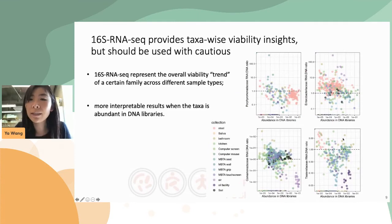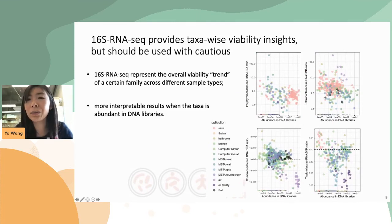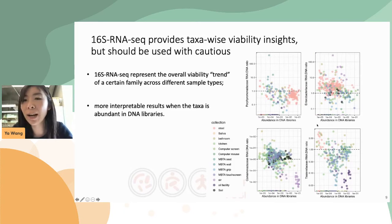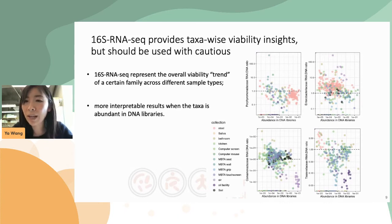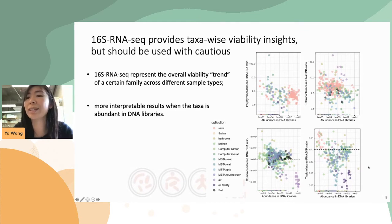It seems that 16S RNA-seq works in some cases but not always. So we zoomed into the taxa to find out who contributed to those differentiations. We used the RNA-to-DNA ratio as an index to measure the relative abundance changes of a genus between RNA and DNA libraries. A higher ratio would suggest the organism is more active, while a lower ratio suggests it is less likely to be viable.